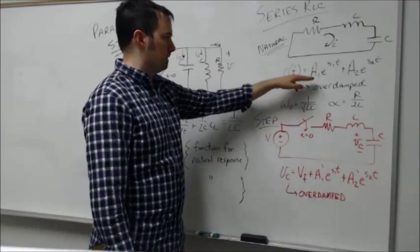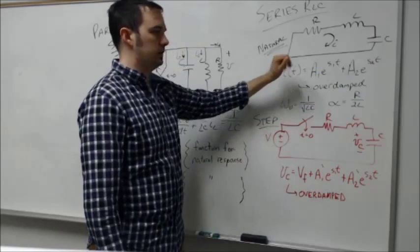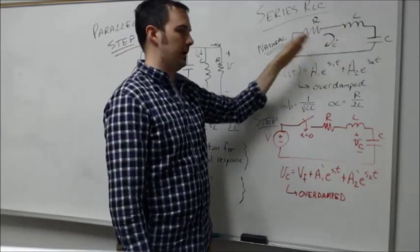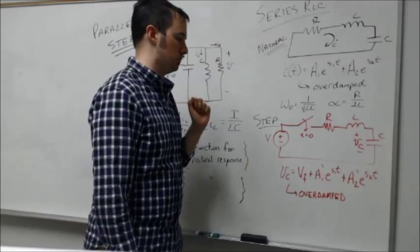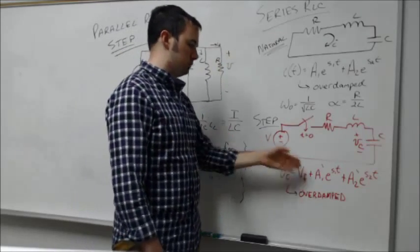Whereas this a1 and a2 up here are based on the initial conditions of my RLC circuit after I've disconnected it from a given source. So you just want to pay attention to where you get the a1 and a2 terms.